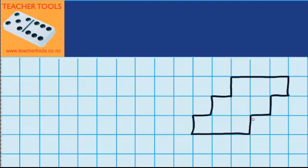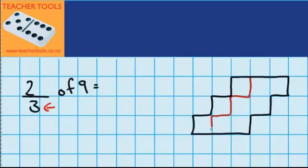Let's have a look at this question. Here I've got 9 blocks and I want to find out what 2 thirds of 9 equals. So first of all I want to see how can I split this shape up so that it is in thirds. And I know that I need to split this shape into thirds because my denominator tells me that.